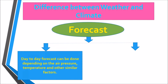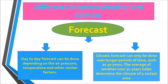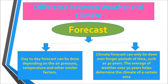Regarding forecasting: weather day-to-day forecasts can be done depending on air pressure, temperature, and other similar factors. Climate forecasts, however, can only be done over longer periods of time, such as 30 years. The average weather over 30 years helps determine the climate over a certain area.